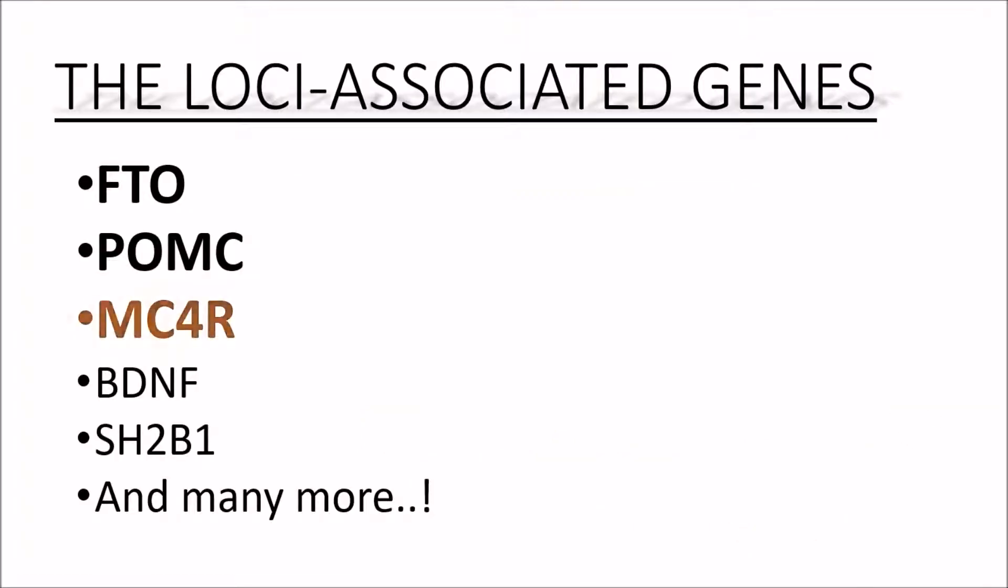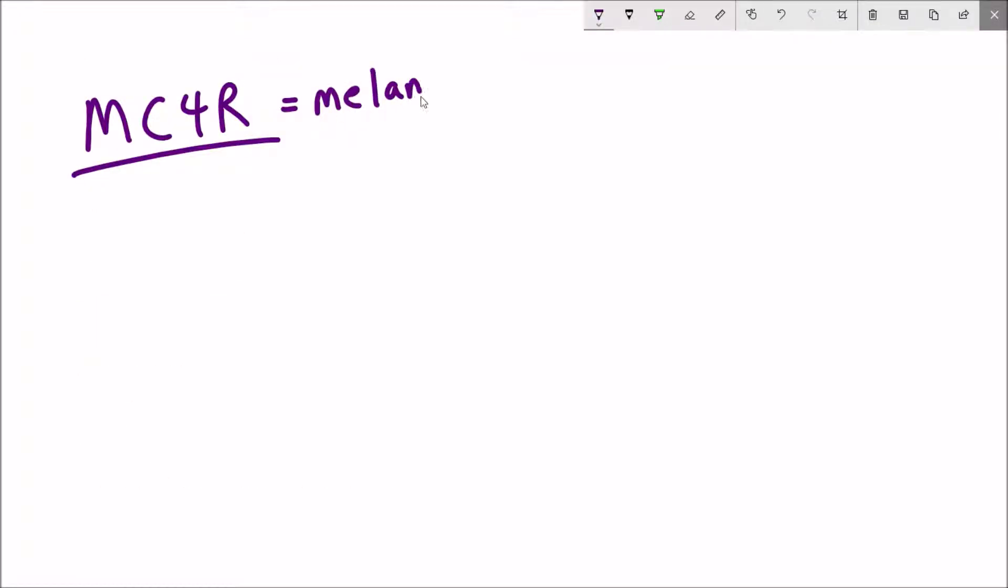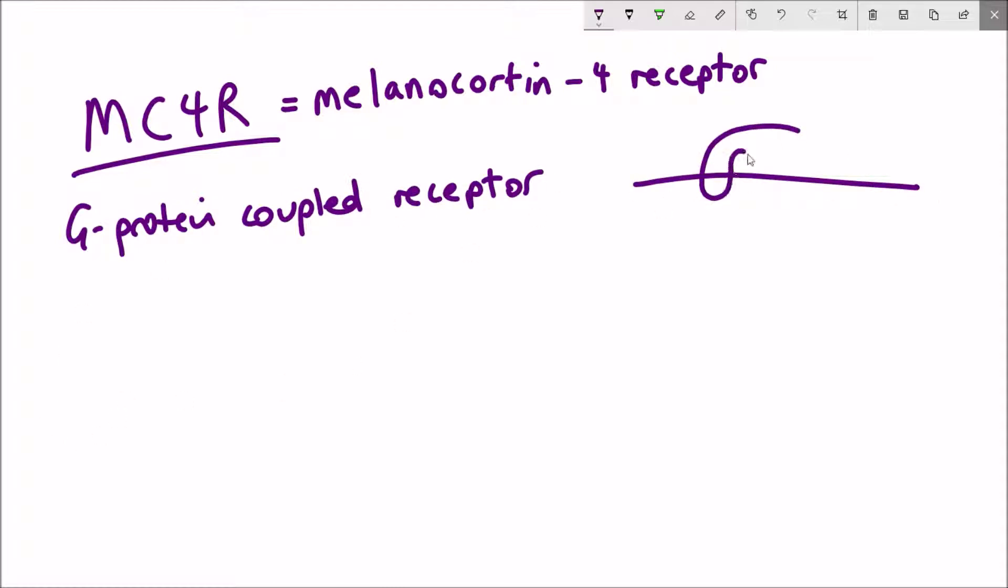Alpha MSH binds to its own receptor and that receptor is MC4R, another one of the loci-associated genes. MC4R stands for melanocortin 4 receptor. MC4R is part of a large family of protein receptors called G-protein coupled receptors, or GPCRs. What's unique about these GPCRs is that they have seven transmembrane domains, as you can see in this sketch.